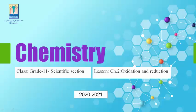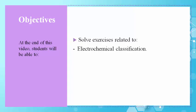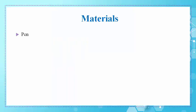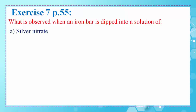As-salamu alaykum wa rahmatullah. We are going to continue our lesson which talks about oxidation and reduction. At the end of this video, you will be able to solve exercises related to electrochemical classification and predicting reactions using the gamma rule by solving exercises 7, 9, 10, 11, and 12. The materials needed during this session are a pen and your chemistry notebook. We'll start by solving exercise 7, which is on page 55 of your chemistry book.